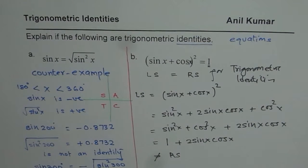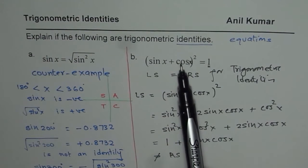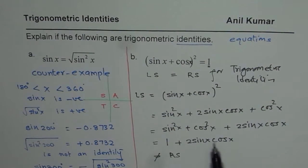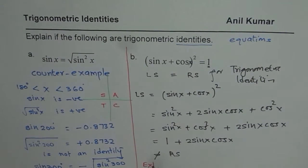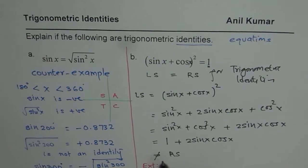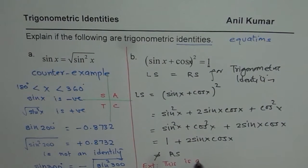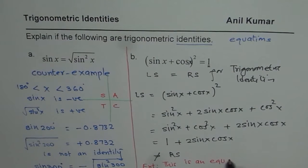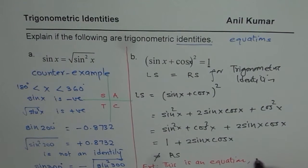So it is not an identity. However, it is a valid equation, which can be true if 2 sin x cos x is 0. That means it is true for only few values. As an extension, you can show that this is an equation whose solution is x equals to whenever sin x and cos x is 0.